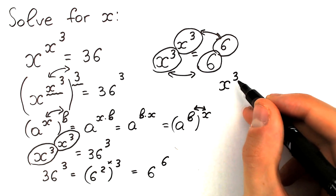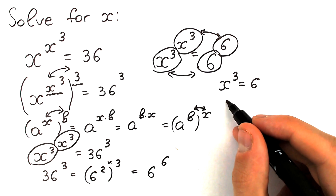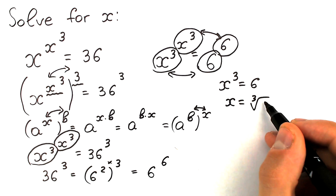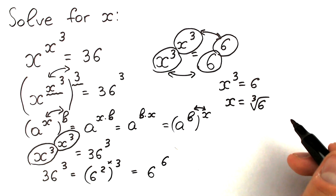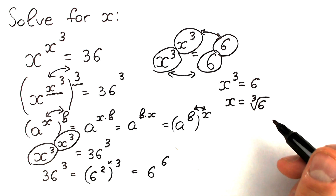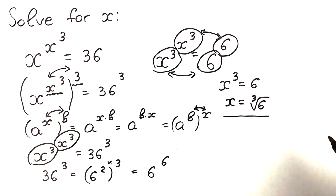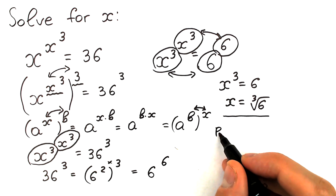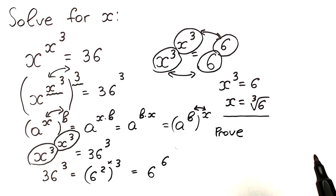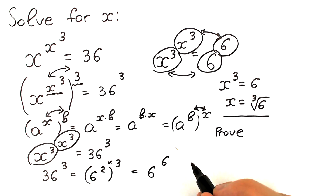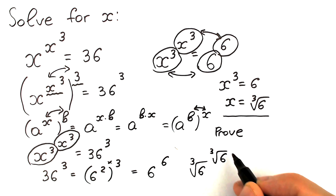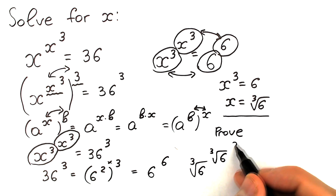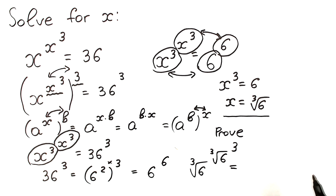From x cubed equals 6, we get x equals the cube root of 6. This looks like our answer, but let's verify it because many students are unsure — let's prove this root. We substitute the cube root of 6: we have the cube root of 6, raised to the power cube root of 6, and that whole thing raised to the power 3. The cube root of 6 to the power 3 simplifies to just 6.